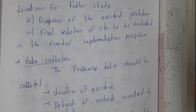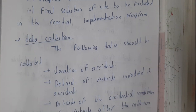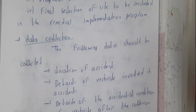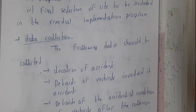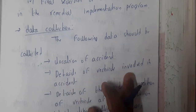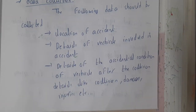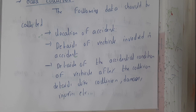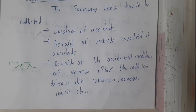Now let us continue with data collection. A questionnaire will be used to collect the following data. The first item is the location of the accident — where exactly it occurred. The second is details of the vehicle involved, such as number plate, model number, and company. The third is details of the accident condition of the vehicle after collision, including collision damage, injuries, and post-collision positions.